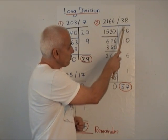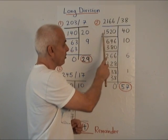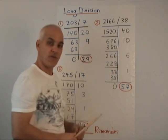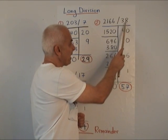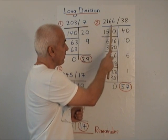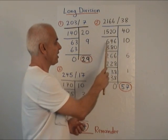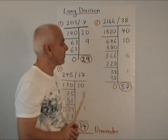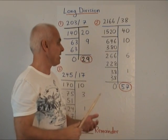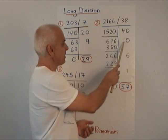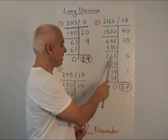And if we actually do the multiplication, 4 times 38 is 152 with an extra 0 makes 1520. So you may have to do that on the side. That multiplication. So 40 times 38 is 1520. We subtract that from 2166 to get 646. And now we ask how many 38s can fit into 646? Let's guess 10. 10 times 38 is 380. When we subtract that, we get 266.